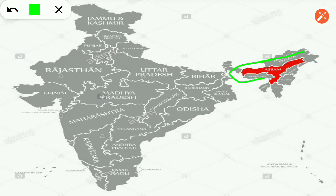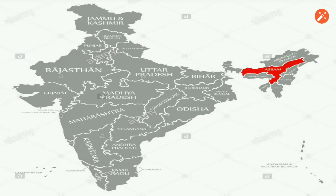If you see the shape of Assam, it is T-shaped. And Assam is also very famous for its tea — tea gardens. So the T-shaped state above Meghalaya, known for tea, is Assam.